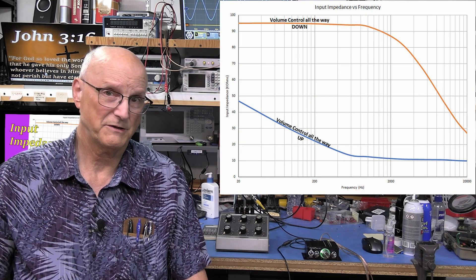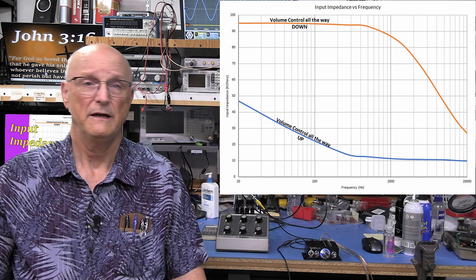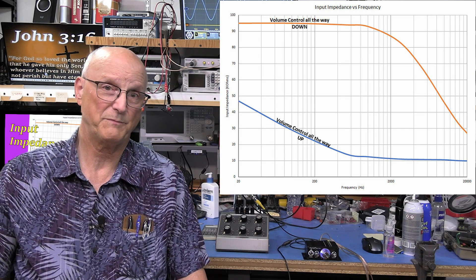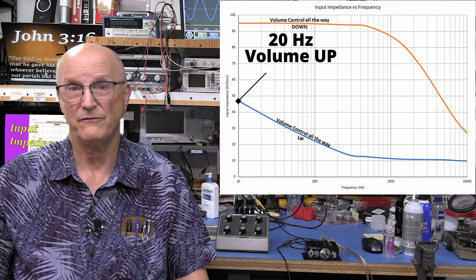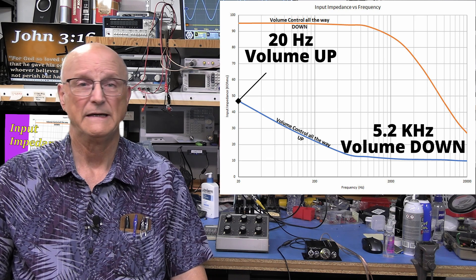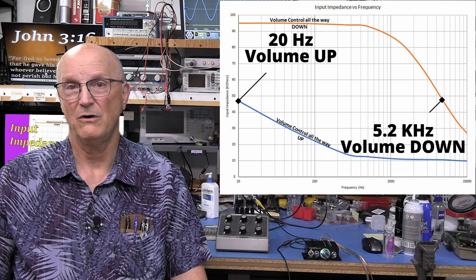As you can see in this chart, the input impedance is in no way a constant, and only agrees with the specification sheet in two places. At 20 Hz with the volume control all the way up, and at 5.2 kHz with the volume control all the way down.